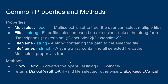The main method we will use with the Open File Dialog is the ShowDialog method. When you call ShowDialog, it creates the Open File Dialog window and allows the user to navigate through the computer to search for a file. ShowDialog returns a DialogResult.OK value if a valid file was selected, or a DialogResult.Cancel value if the user cancelled or closed the window before selecting a file.